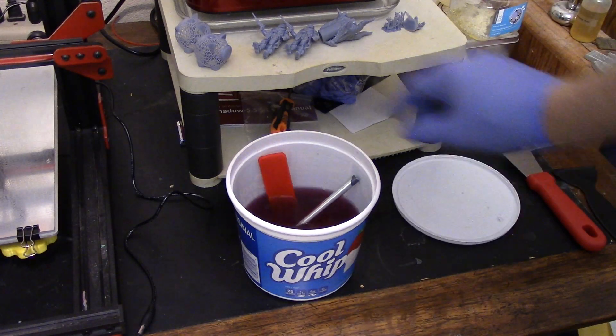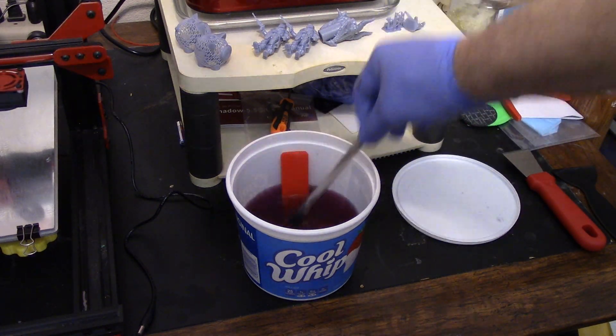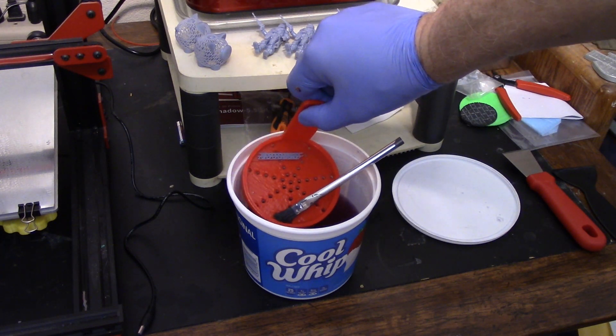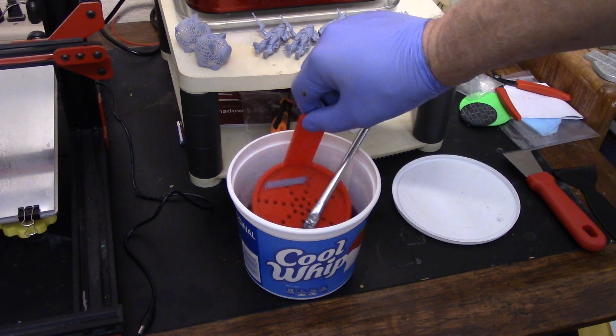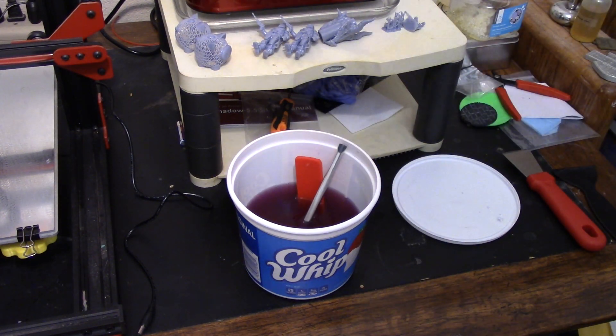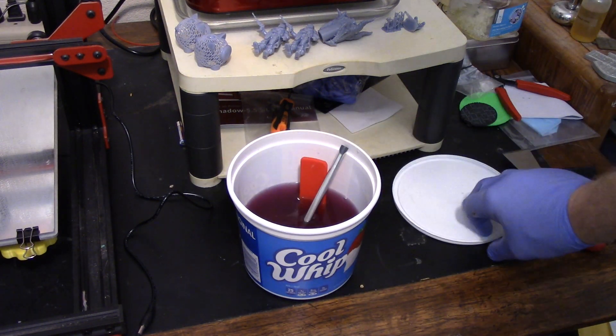So in there, I have a little acid brush. I have a little strainer thing I made, and it's got a chunk of support already in it. There was one of these off Thingiverse. I didn't care for it. It didn't fit my Cool Whip container very well. So I just jumped into Fusion and made one.